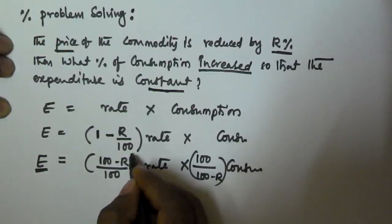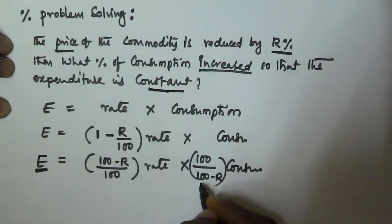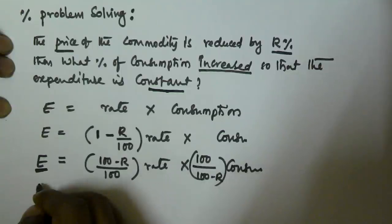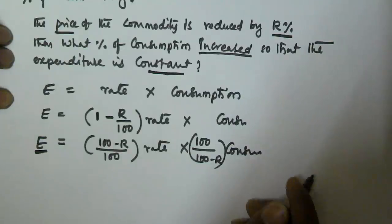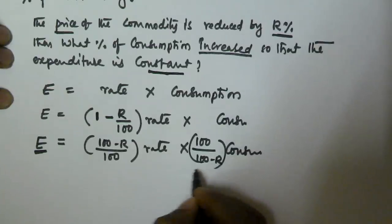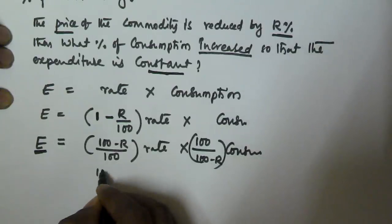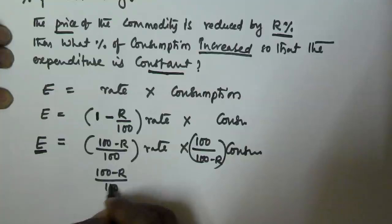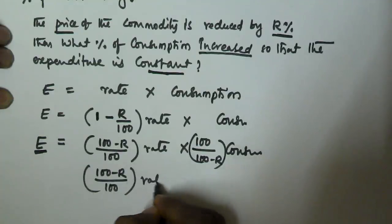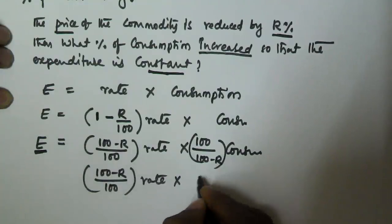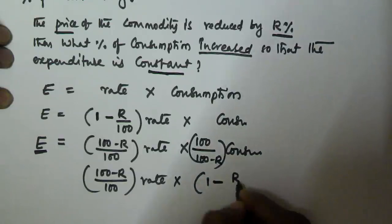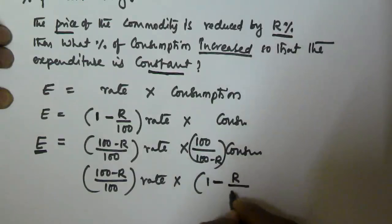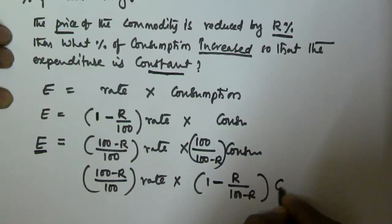Then, 100 and 100 will cancel, and (100 minus R) and (100 minus R) will cancel, making the expenditure constant. The same equation can be rewritten as (100 minus R)/100 into rate, multiplied by 1 minus R/(100 minus R) into consumption.